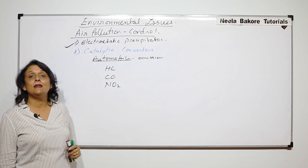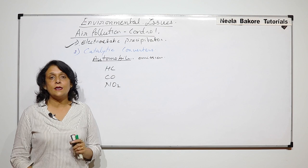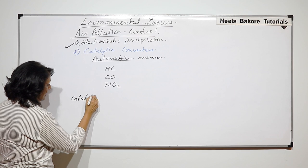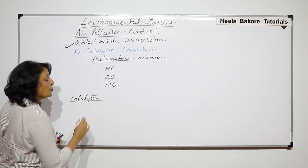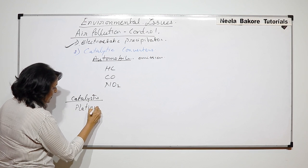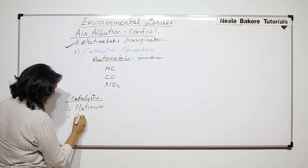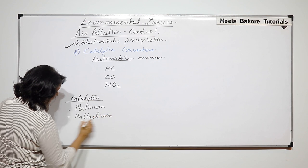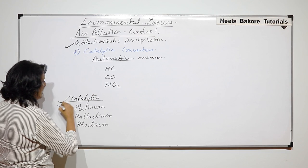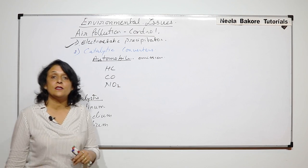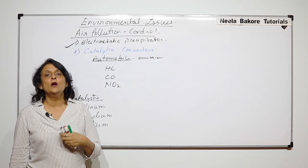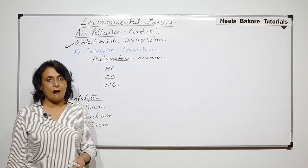Using these catalytic converters — as the name tells us — they have catalysts. The catalysts which are used are expensive: platinum, palladium, and rhodium. These are used as catalysts for converting these harmful substances into less harmful or non-harmful substances.